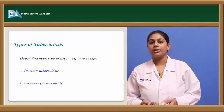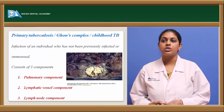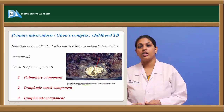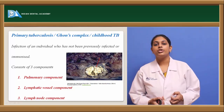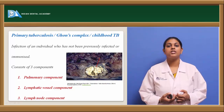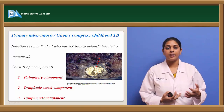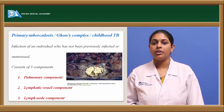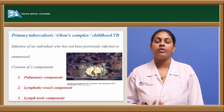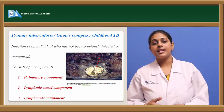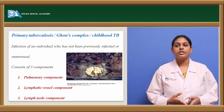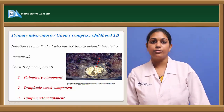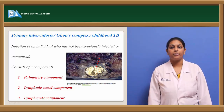Coming to the types of tuberculosis based on tissue response and age: primary tuberculosis is also known as primary complex, Ghon's complex, Ghon's focus, or childhood tuberculosis, so called because it is more commonly affecting children. An infection in an individual not previously infected or immunized is known as primary tuberculosis. This complex consists of three components: the pulmonary component, lymphatic vessel component, and lymph node component.